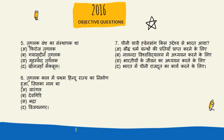Next question: Tughlaq vansh ka sansthapak tha — to jo iska sahi answer hai woh hai Ghiyasuddin Tughlaq. Aap dekhiye iske yaad karne ki trick jo hai woh bahut aasaan hai: Tughlaq mein bhi 'G' aaya hai aur dekhiye Ghiyasuddin ke starting mein bhi 'G' hai. To is prakar se hum yaad kar sakte hain. Next question: Tughlaq Kaal mein pratham Hindu rajya ka nirmaan hua jiska naam tha.